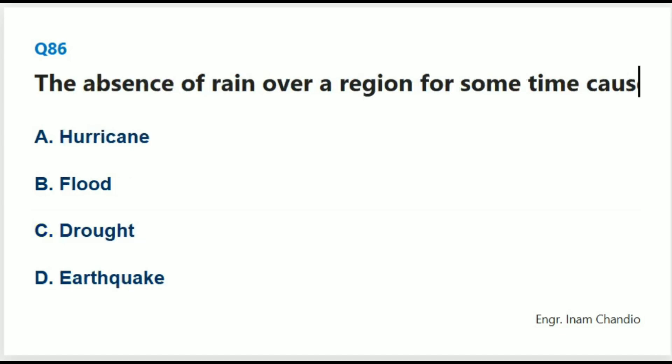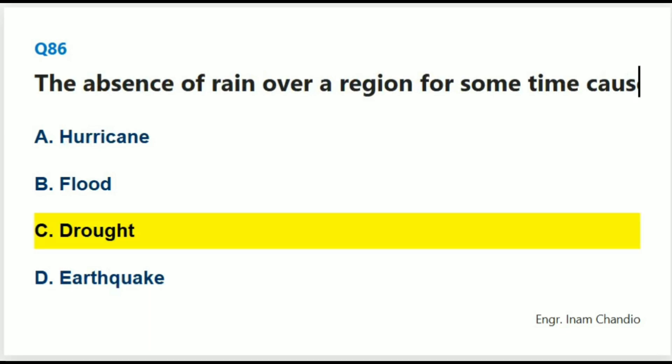The absence of rain over a region for some time causes the land to dry and results in: The correct answer is C. Drought.